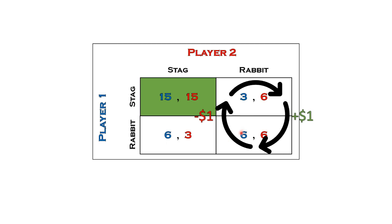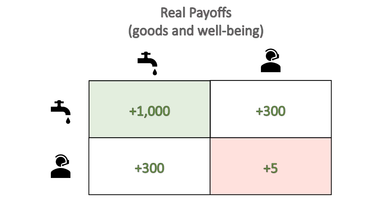For an applied example, let's compare two types of possible labor, sticking with two players for simplicity. We have two options: one, we can build wells to provide clean drinking water, and two, we can be telemarketers and sell people things they don't really need. In the green cooperative quadrant, we have tangible production that provides substantial utility or benefit to well-being. In the red quadrant, we have little to no real production, with individuals simply convincing each other to purchase low-utility goods. These payoff values represent real benefits — things that we really create — but unfortunately, this reality is not what our decision-making focuses on.